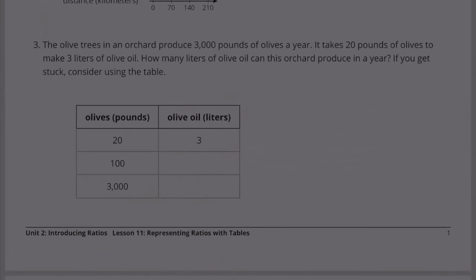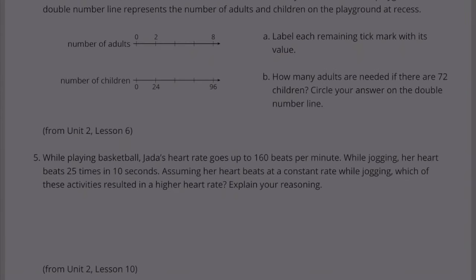Number 3. The olive trees in an orchard produce 3,000 pounds of olives a year. It takes 20 pounds of olives to make 3 liters of olive oil. How many liters of olive oil can this orchard produce in a year? If you get stuck, consider using the table.